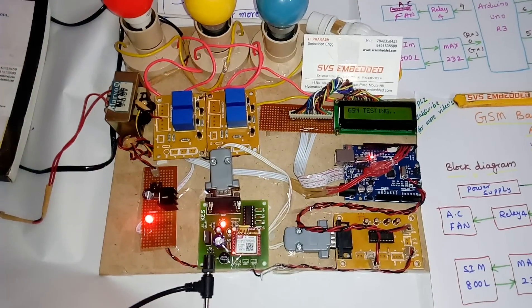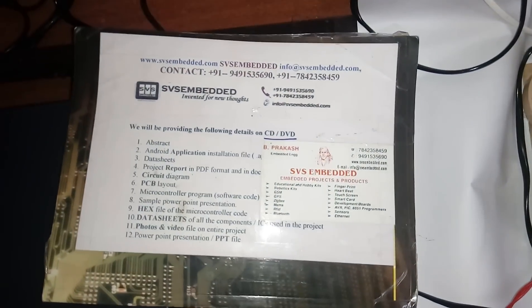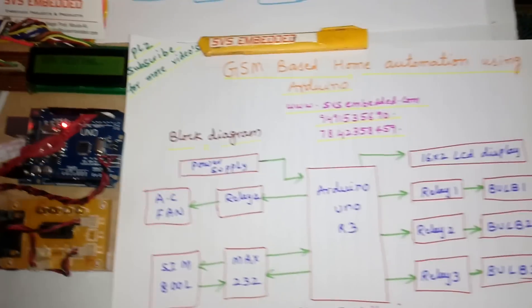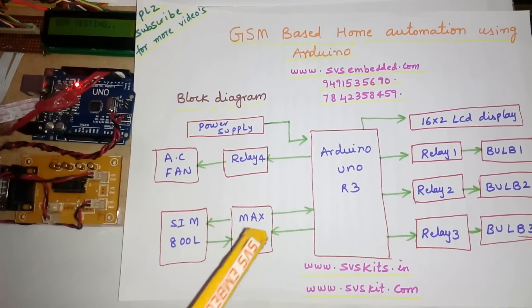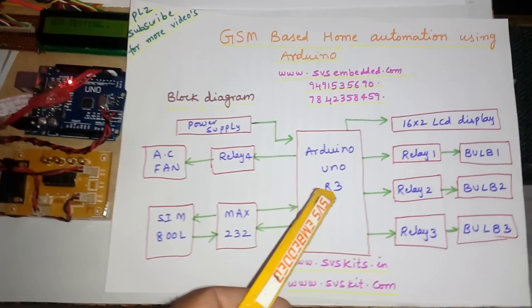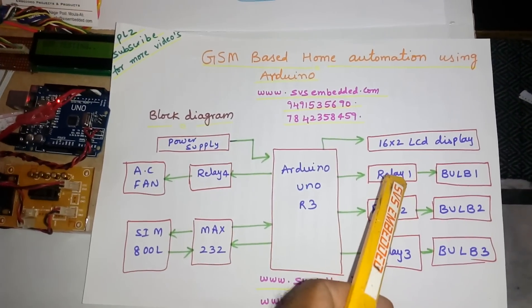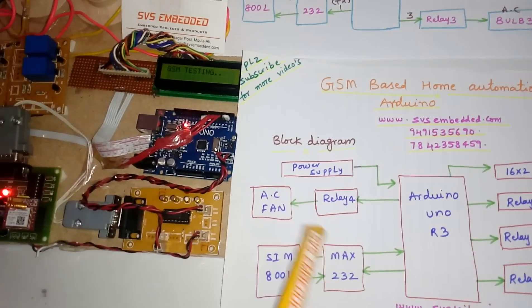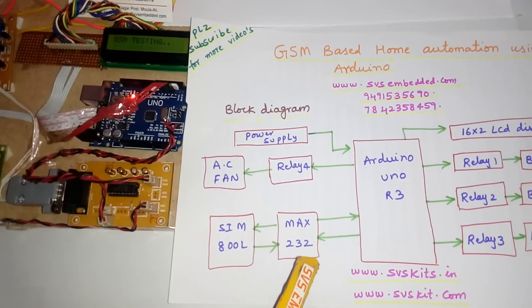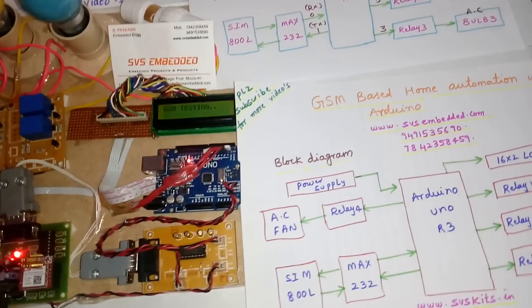Hi, we are from SVS Embedded. The project title is GSM-based home automation using Android. I am using an Arduino Uno R3, one 16x2 LCD display, four relay coils, AC bulbs — bulb one, bulb two, bulb three — and one AC fan. I am also using one MAX232 and one SIM800L GSM modem. This is the entire block diagram.